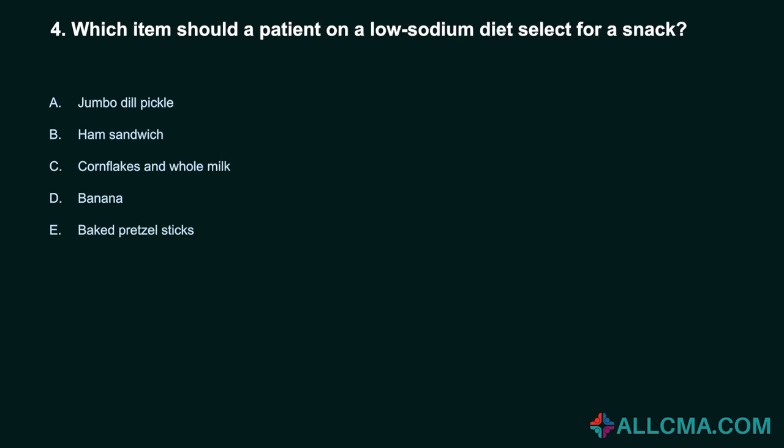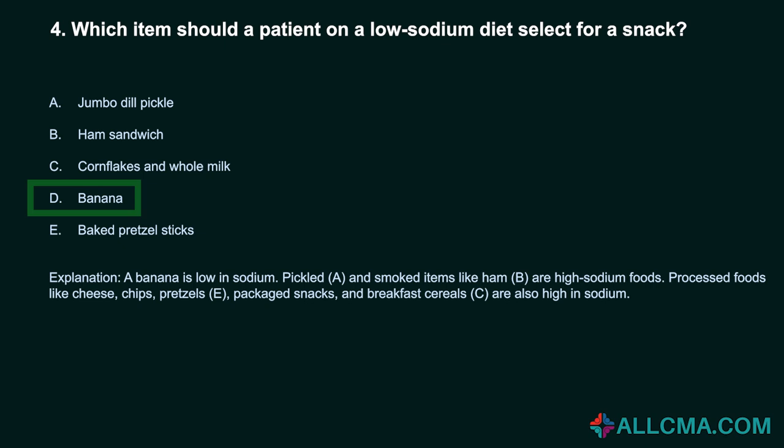Question 4: Which item should a patient on a low-sodium diet select for a snack? A. Jumbo dill pickle. B. Ham sandwich. C. Cornflakes and whole milk. D. Banana. E. Baked pretzel sticks. Correct answer: D. Banana. A banana is low in sodium. Pickled and smoked items like ham are high-sodium foods. Processed foods like cheese, chips, pretzels, and breakfast cereals are also high in sodium.